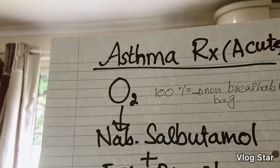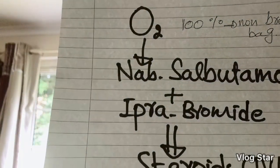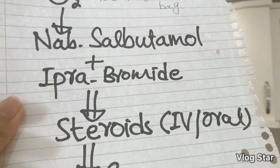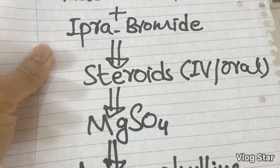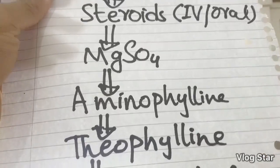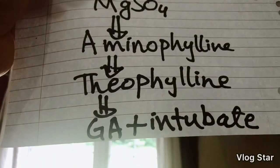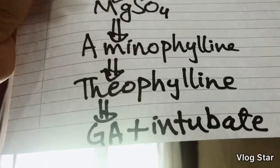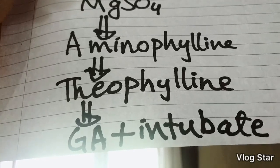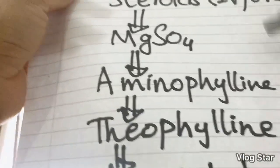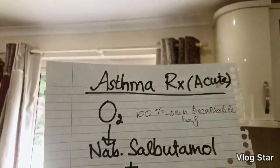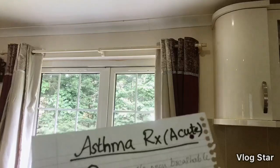If oxygen doesn't work, give nebulized salbutamol and ipratropium bromide. If that also doesn't work, give the patient steroids — IV or oral. If that doesn't work, give magnesium sulfate. If that doesn't work, move on to aminophylline, then theophylline. If theophylline also doesn't work, we proceed to general anesthesia and intubation — a very common theme in GMC scenarios: call the anaesthetist and intubate.